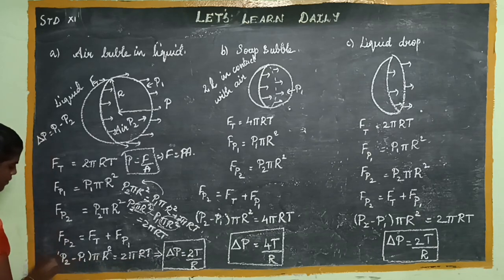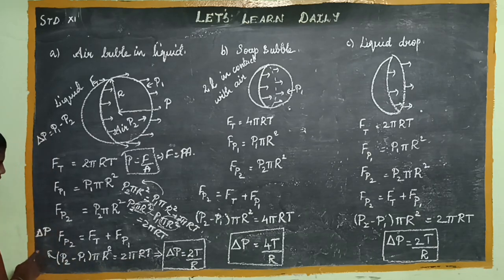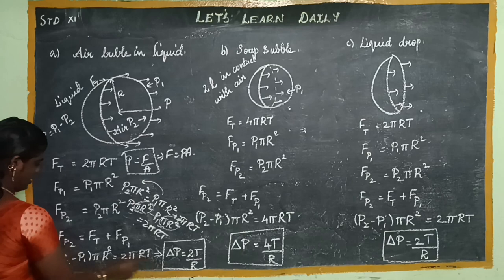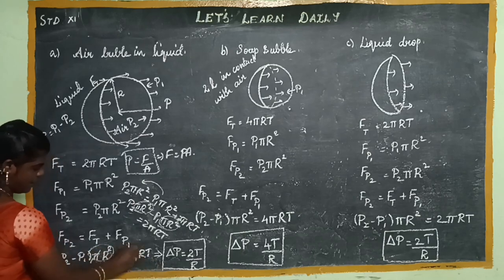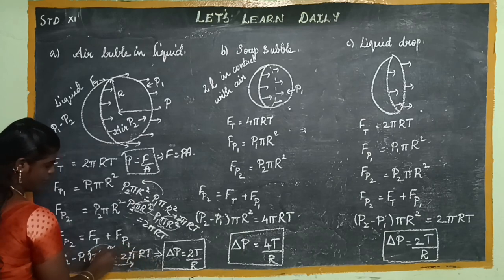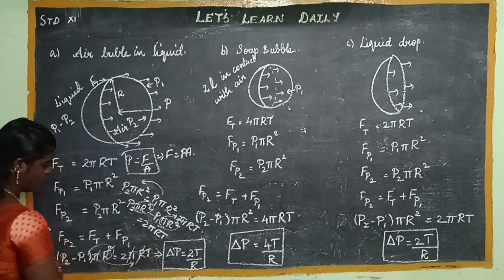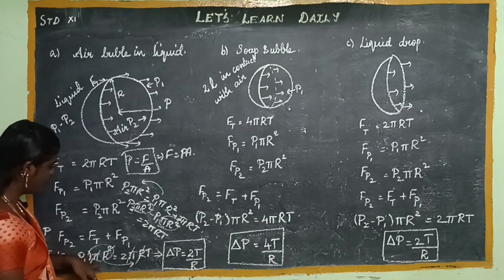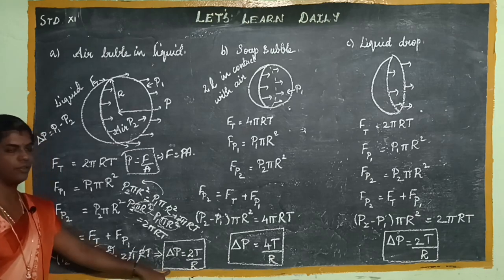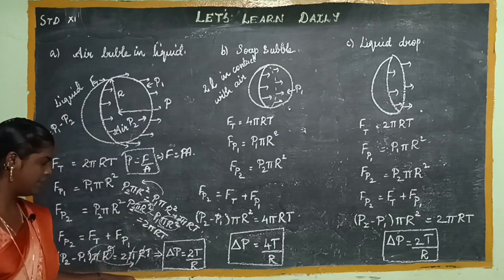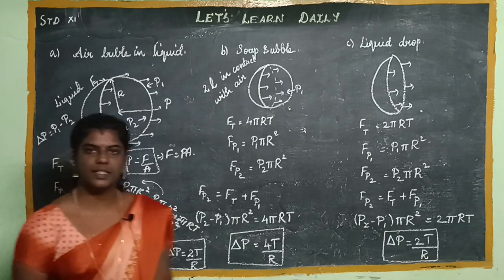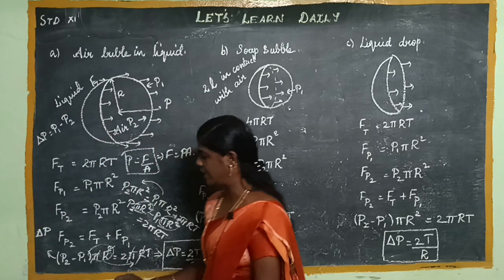Now, P2 minus P1 is ΔP. So ΔP equals 2πRT divided by πR². The π cancels out and one R cancels, giving ΔP = 2T/R. This is the excess pressure for an air bubble in liquid.